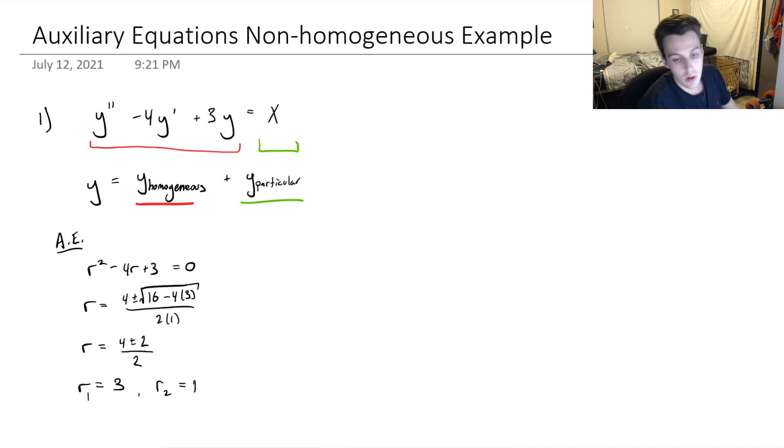So two solutions to our characteristic equation here or auxiliary equation is 3 and 1. So we know that we got two real solutions, so the homogeneous solution will be a linear combination of, we'll call this A.